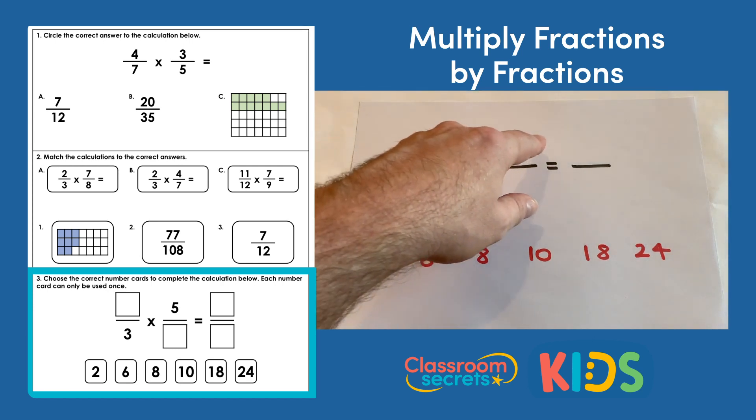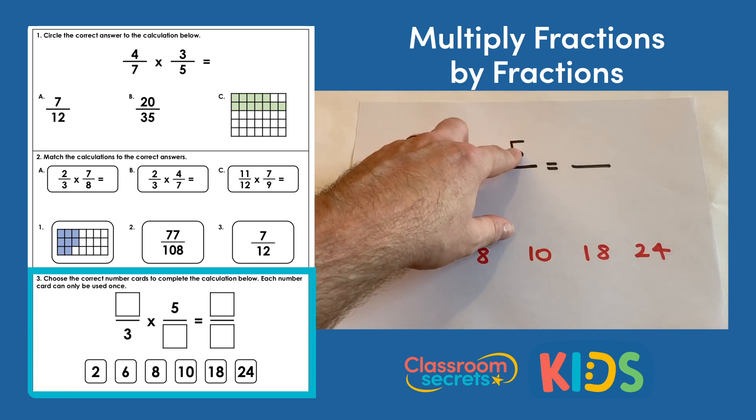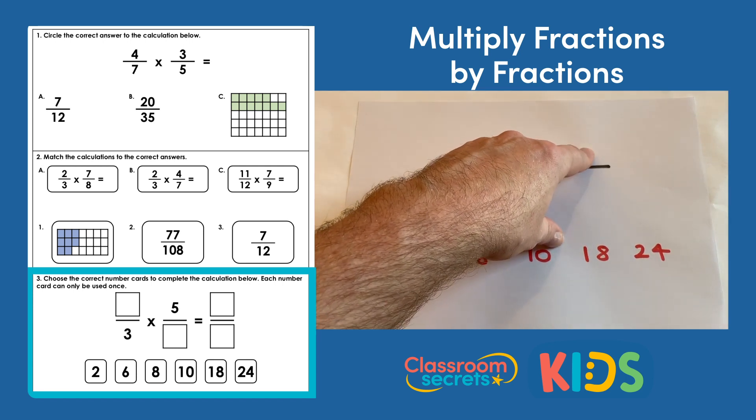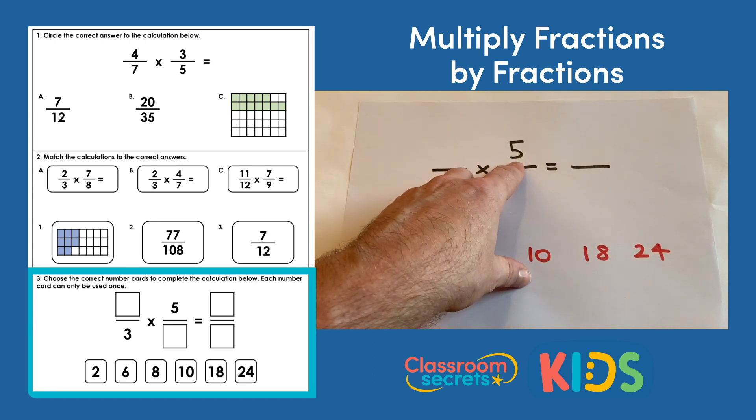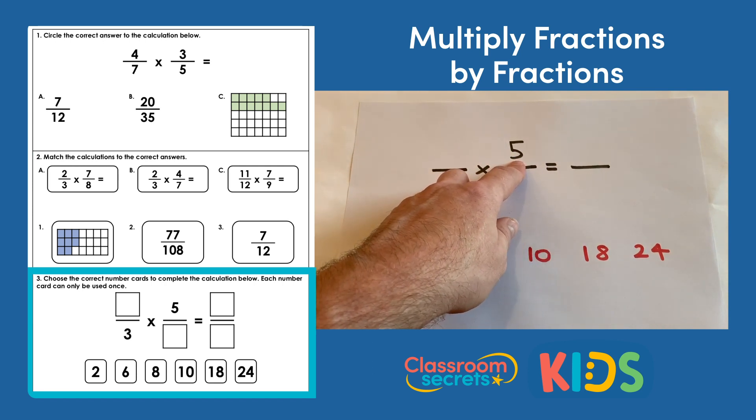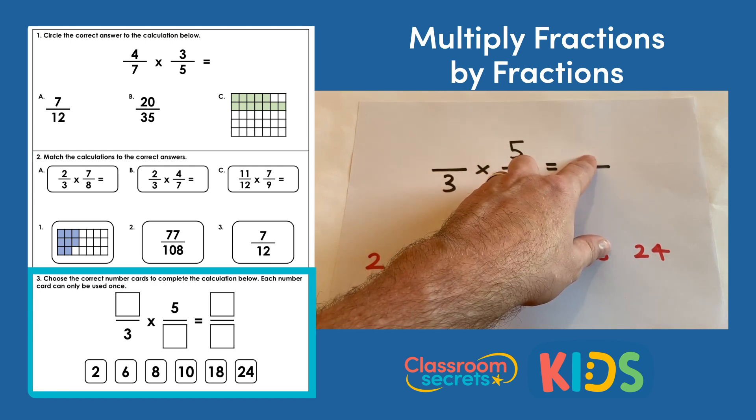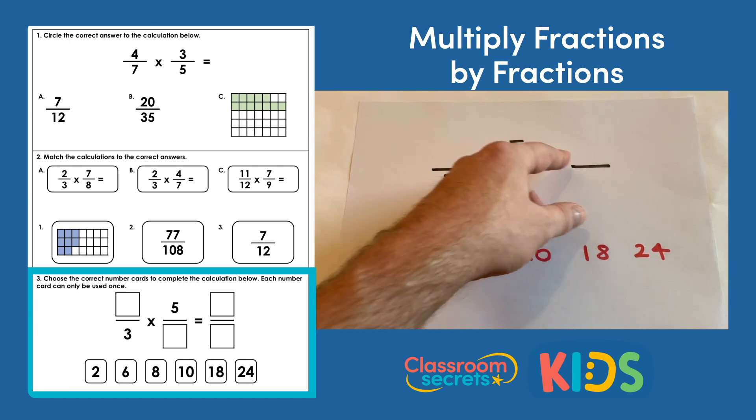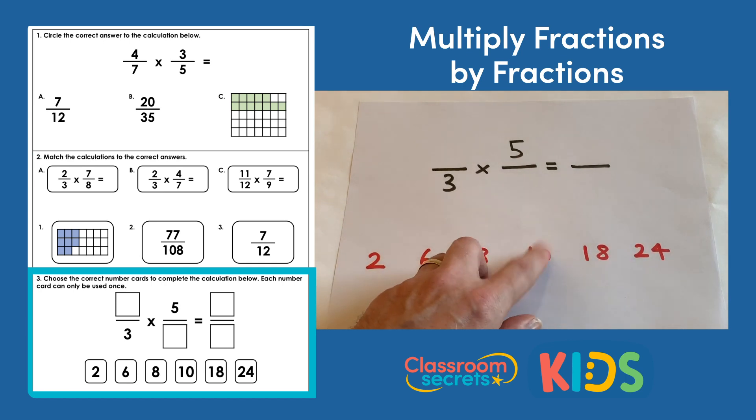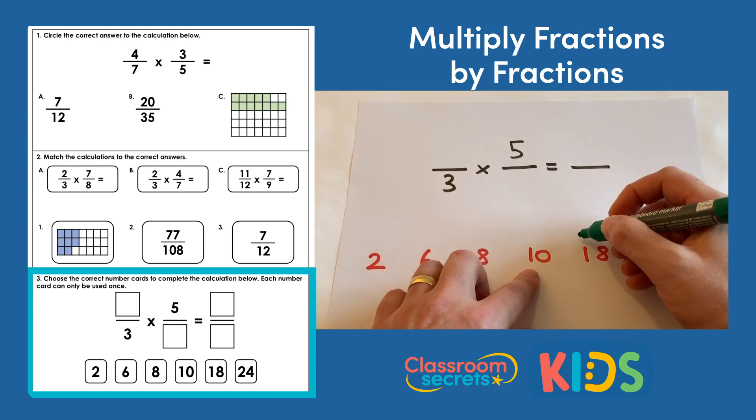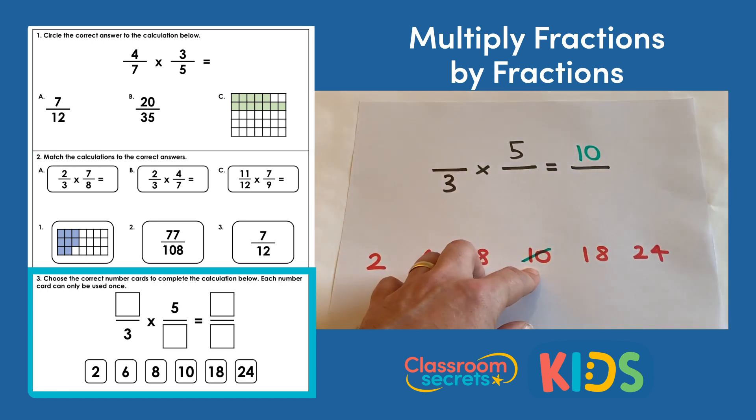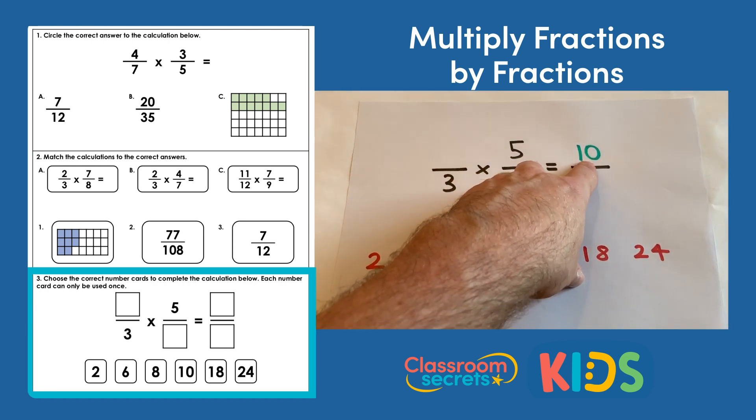We look at the numerator—we know that this numerator multiplied by this numerator is going to give this numerator here, and we know that one of the numerators we're multiplying is 5. So the result here of that multiplication has to be a multiple of 5. If we look at the numbers that we've got, the only one that we could use would be 10, so 10 is going to have to go as our numerator there.